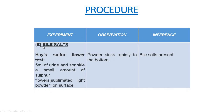The next test is for bile salts, and we perform Hay's sulfur flower test. We take 5 ml of the urine sample and sprinkle a small amount of sulfur flowers — these are sublimated light powders of sulfur — on the surface of the urine in the test tube. If the powder sinks rapidly to the bottom, it shows the presence of bile salts in the urine sample.